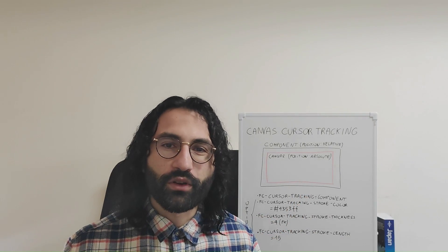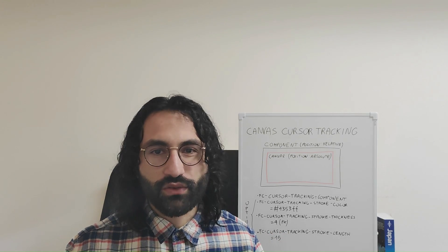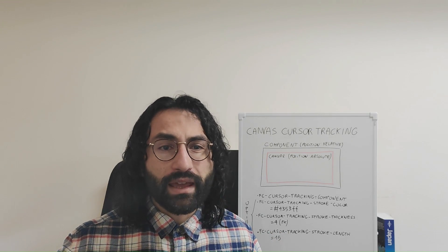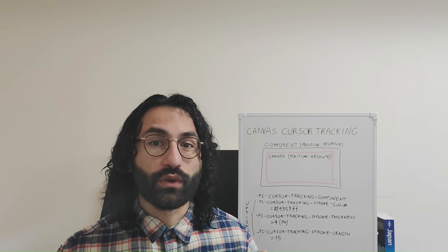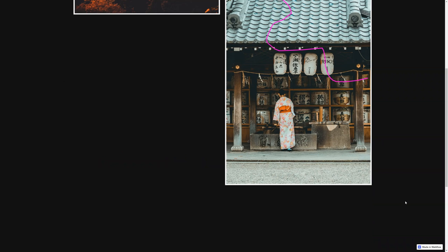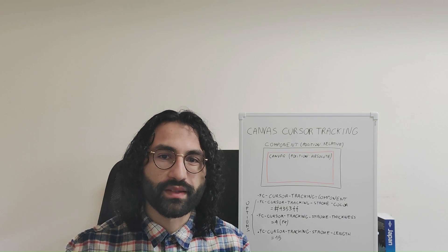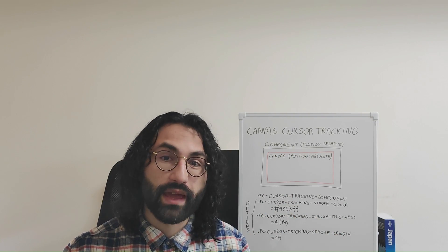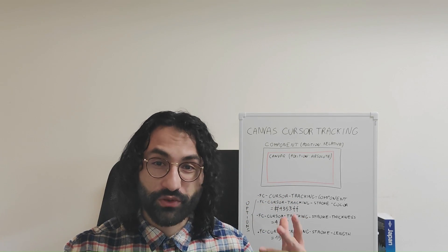In today's video we are going to merge the Canvas API and Webflow to create a fancy canvas cursor tracking effect — an attributes-only solution so you won't need to code — and we are going to build a project that will look exactly like this. This project is available inside the clonable, and you will find the link to this clonable and to the instructions page containing all the steps required in the description down below.